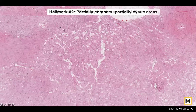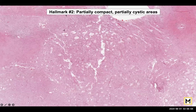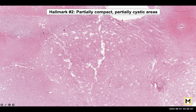This is the second diagnostic hallmark where you can see compact areas — very clear, very easy to diagnose. You have partially compact areas and then you have this central area which is partially cystic. You can see these cystic areas, and this is another diagnostic hallmark to keep in mind.